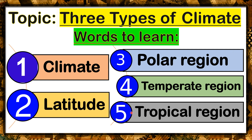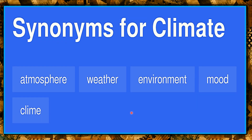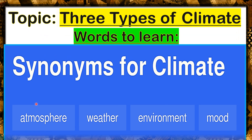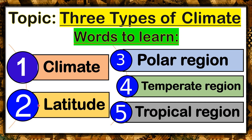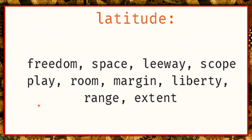Let's read the meaning of these words one by one. The synonyms for the word climate are: atmosphere, weather, environment, mood, and climate. Next, latitude means freedom, space, leeway, scope, play, room, margin, liberty, range, and extent.